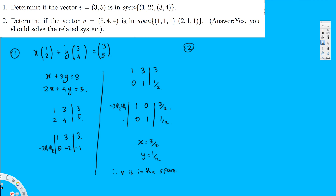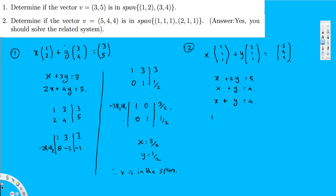The second question is the same kind: determine if v = (5, 4, 4) is in the span of (1, 1, 1) and (2, 1, 1). I do the same approach: x times (1, 1, 1) plus y times (2, 1, 1) equals (5, 4, 4). This creates three equations: x + 2y = 5, x + y = 4, and x + y = 4. In matrix form: [1, 2 | 5], [1, 1 | 4], [1, 1 | 4].